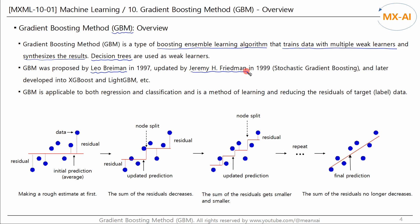Since then, GBM has developed into XGBoost and LightGBM, among others. GBM is applicable to both regression and classification, and is characterized by training on the residuals of the target data.